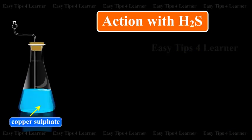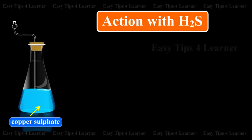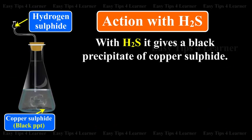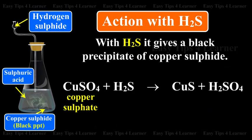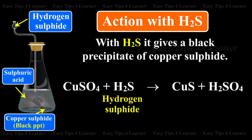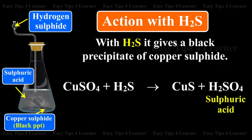Action with hydrogen sulfide: With hydrogen sulfide, it gives a black precipitate of copper sulfide. Copper sulfate plus hydrogen sulfide gives a black precipitate of copper sulfide plus sulfuric acid.